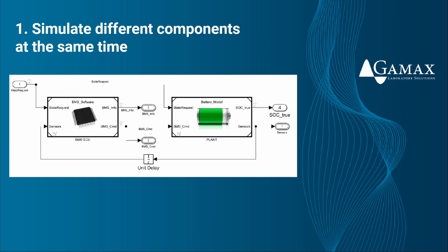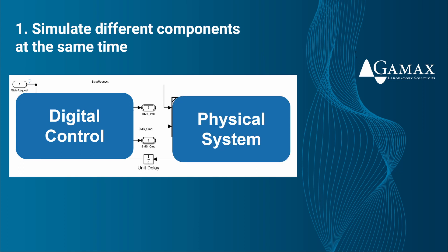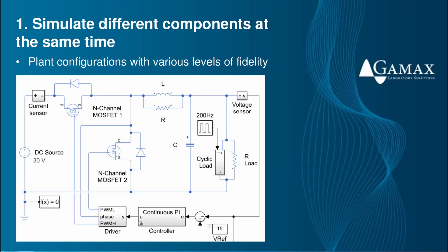Let's see the first one: the simulation of different components simultaneously. Before we can use simulations in the design of a digital control for our system, we must first express the control algorithms as discrete or digital functions and the active and passive electrical components as continuous or analog models. We are able to do this in the same model simultaneously. The model will help us evaluate different physical plant configurations, explore the effects of different switching frequencies, and understand how component thermal characteristics affect the efficiency.